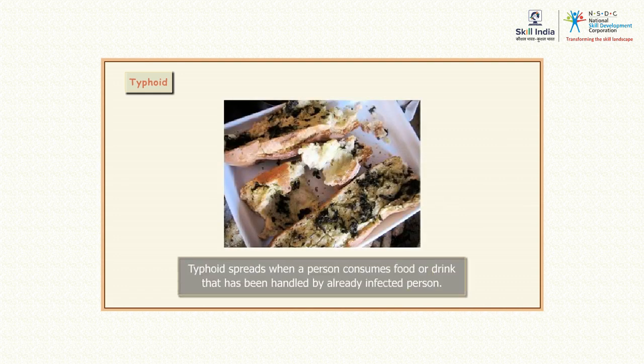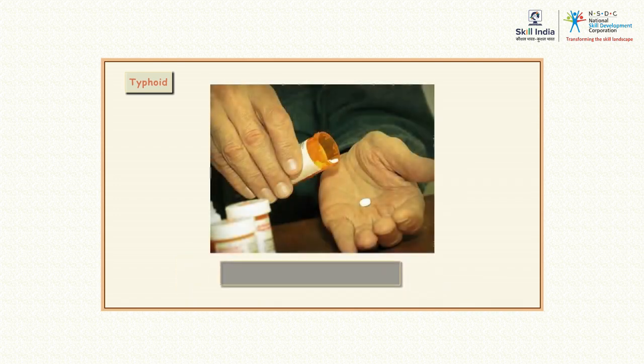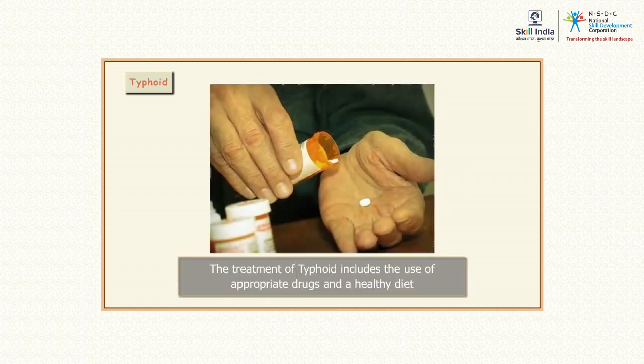Typhoid spreads when a person consumes food or drink that has been handled by an already infected person. The treatment of typhoid includes the use of appropriate drugs and a healthy diet.